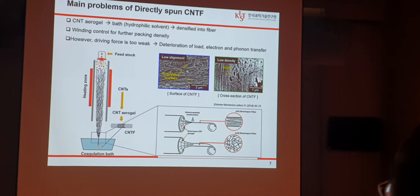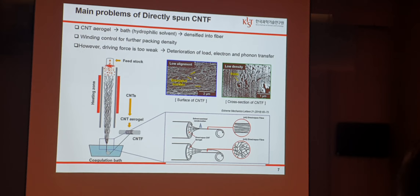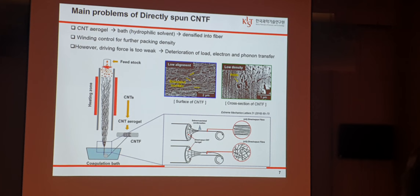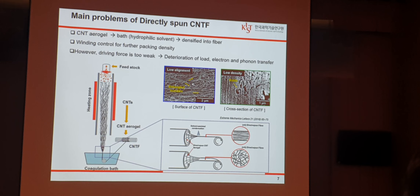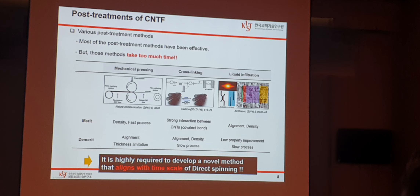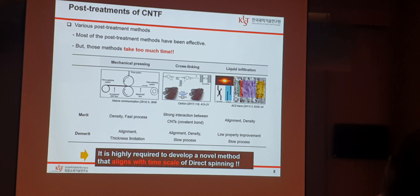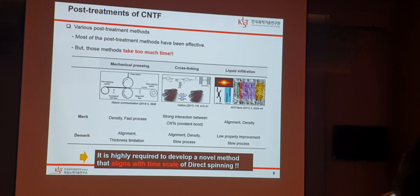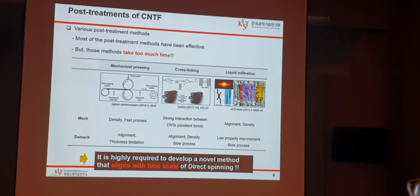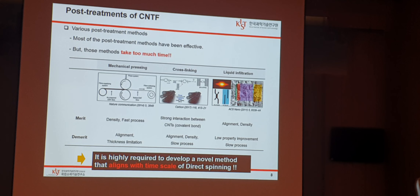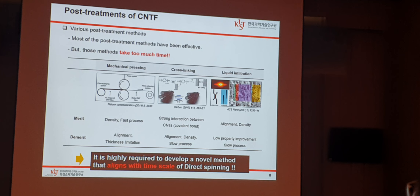Unfortunately, the driving force for alignment and densification is insufficient to generate a highly aligned and densified fiber structure. These loosely packed CNT bundles ultimately deteriorate load, electron, and phonon transfer. In order to increase the properties of CNT fiber, these structural imperfections should be addressed through post-treatment. There have been various post-treatment methods such as mechanical pressing, cross-linking, and liquid infiltration. Most have been successful in increasing certain properties, but it has been challenging to improve alignment and density simultaneously. More importantly, these methods are time-consuming, which compromises the advantage of direct spinning. So, a new method aligned with the time scale of direct spinning is highly required.